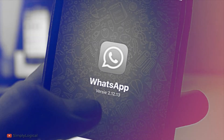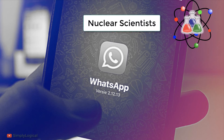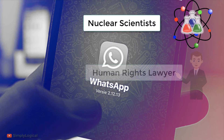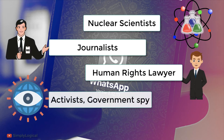Although the spyware was not for mass surveillance, attackers targeted high-profile individuals like nuclear scientists, human rights lawyers, journalists, activists, or government spies. Such incidents of hacking often spark fear, confusion, uncertainties, and sometimes even misinterpretations.